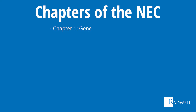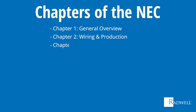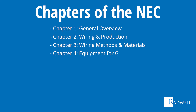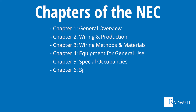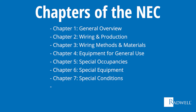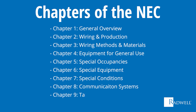Chapter 1 covers the general overview. Chapter 2 is about wiring and production. Chapter 3 outlines wiring methods and materials. Chapter 4 discusses equipment for general use. Chapter 5 is information about special occupancies. Chapter 6 talks about special equipment. Chapter 7 is about special conditions. Chapter 8 is about communication systems. And Chapter 9 is tables.